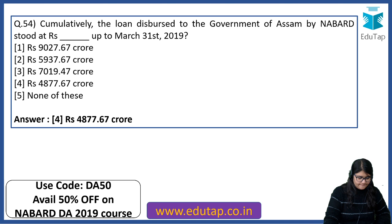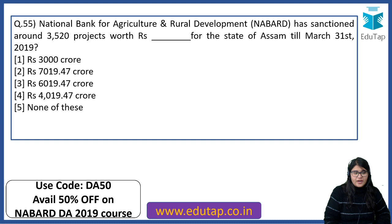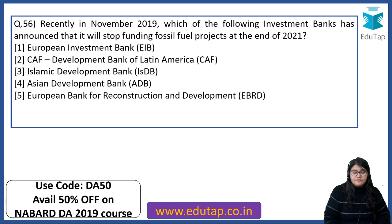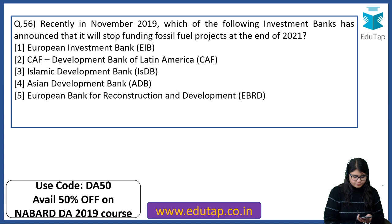NABARD has sanctioned around 3,520 projects worth Rs. 7,019.47 crore for the state of Assam till March 31st, 2019. Recently in November 2019, which investment bank announced it will stop funding fossil fuel projects at the end of 2021? The right answer is European Investment Bank.